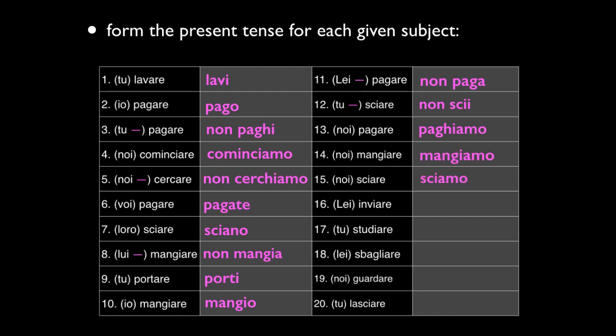Number fourteen is MANGIAMO. Number fifteen is SCIAMO. Number sixteen is another emphasized IARE verb — INVIARE — but here the answer is LEI INVIA, conjugated the same way for Lei. Number seventeen is TU STUDI — don't double the I for that one; it's STUDIO in the IO form with no emphasis on the I. Number eighteen is LEI SBAGLIA. Number nineteen is GUARDIAMO. And number twenty is TU LASCI — again, don't double the I.